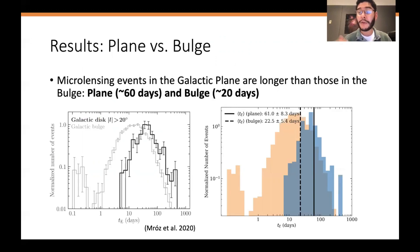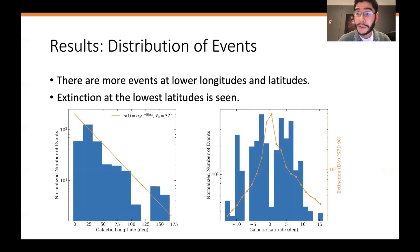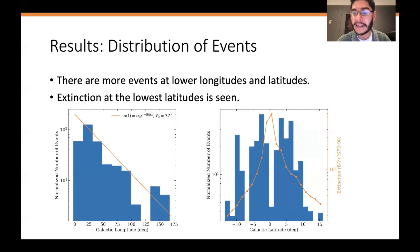The main result is that galactic plane microlensing events last about three times as long as those previously found toward the galactic bulge, as expected due to the relative motion of the lens and the source. On average, events toward the plane last about 60 days and toward the bulge about 20 days. The distribution of events then provides an independent probe of galactic structure. The number of events plotted as a function of galactic longitude shows an exponential drop-off with a characteristic angle of about 37 degrees, probing the exponentially decreasing density of lenses in our galaxy as a function of longitude.